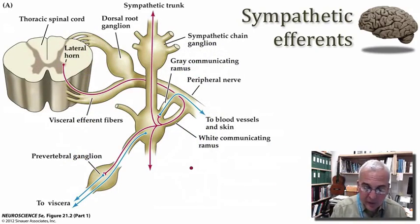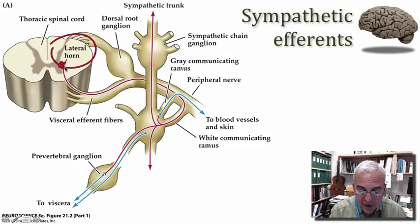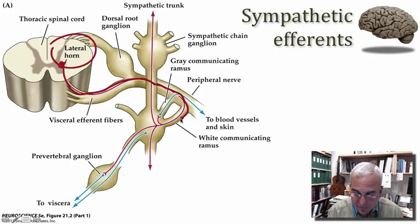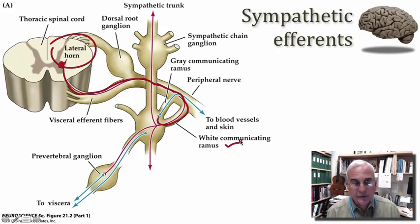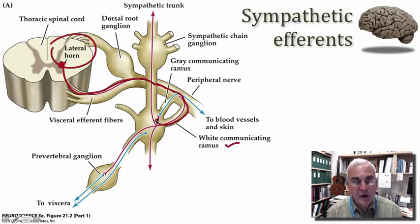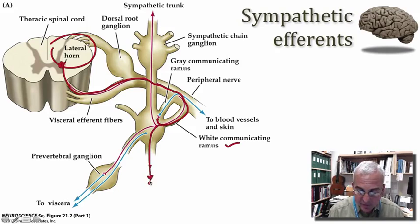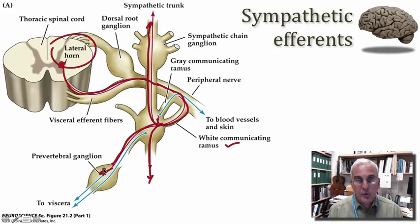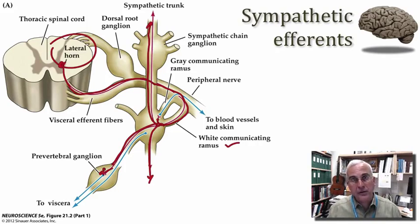Looking at this organization: we have the lateral horn of the spinal cord, a cell body that grows an axon exiting through the ventral root into the spinal nerve, then exiting that spinal nerve to join the sympathetic trunk. This little branch is called the white communicating ramus — white because these axons are well myelinated. Once these axons enter the sympathetic trunk, they may synapse with a ganglion at the same level, run some distance to reach more distant ganglia, or run right through a ganglion to reach a more distant target. Some ganglia are set in a more anterior location at a greater distance — these are called pre-vertebral ganglia.